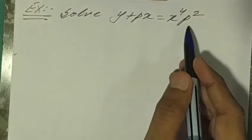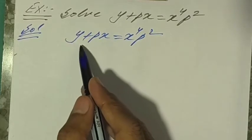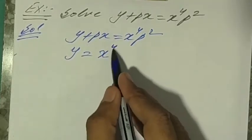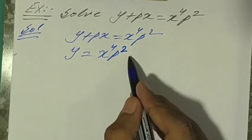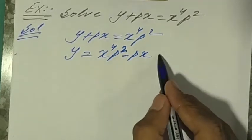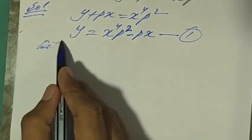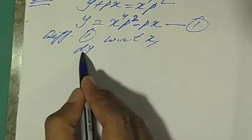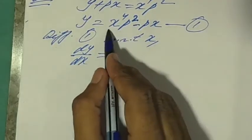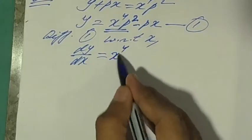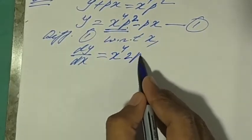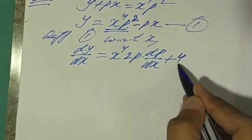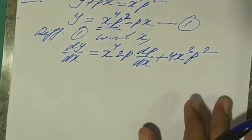This equation is solvable for y. Retaining y on the left side, we transpose to get y = x⁴p² - px — equation 1. Differentiating equation 1 with respect to x using the product rule: dy/dx = x⁴·(2p·dp/dx) + 4x³·p² - p - x·dp/dx.